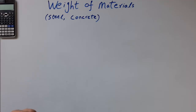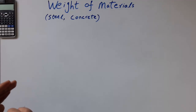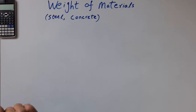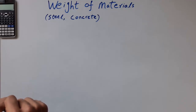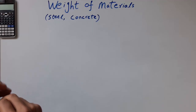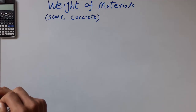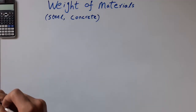Hello and welcome to my YouTube channel. In this video I'm going to explain how to calculate the weight of materials. We have two types of material: steel and concrete. Concrete has also two types — one is normal concrete and the other one is lightweight concrete. So how can we calculate the material weight?